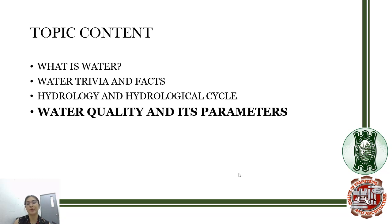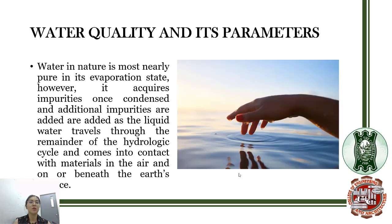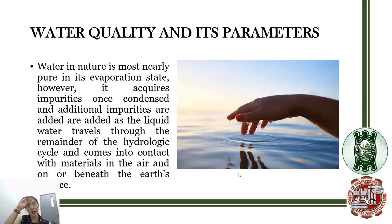Let's go to water quality and its parameters — how do we measure the quality of water? Water in nature is most nearly pure when it is in its evaporated state. However, as it condenses, it acquires impurities. When water travels through the remainder of the hydrologic cycle and comes into contact with materials in the air and on or beneath the earth's surface, it is no longer very pure once it falls to the ground through precipitation.